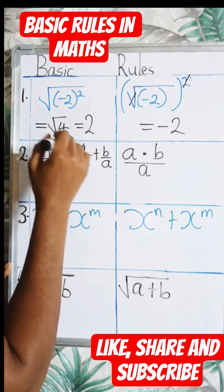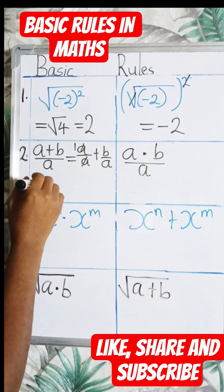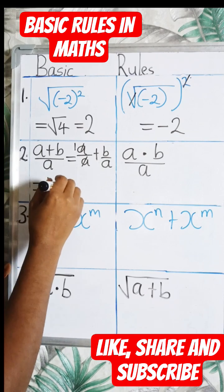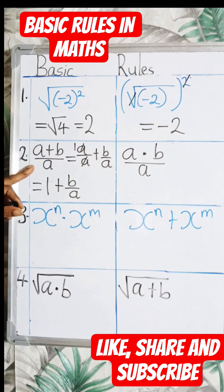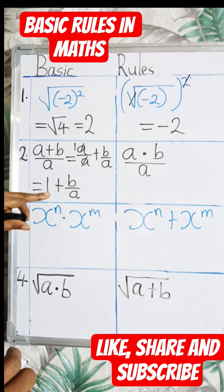A divided by a is 1, so we have 1 plus b divided by a. This is the answer to this expression.